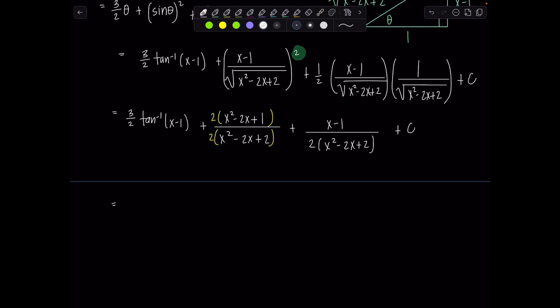Everything's coming together so fabulously. So 3 halves, tan inverse, x minus 1 plus, you guys, I'm going to distribute the two and combine like terms simultaneously if you'll allow it. So it'll be 2x squared. This is going to give me minus 4x plus x, so that's minus 3x. And then I have plus 2 minus 1, so plus 1 plus c.